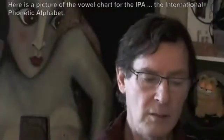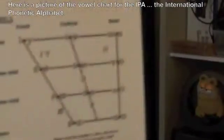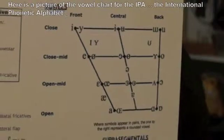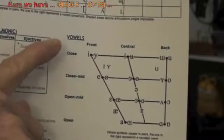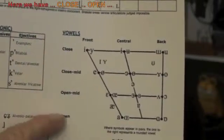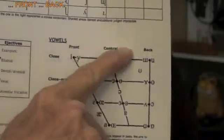So we have close, open, back, front. Here is a picture of the vowel chart for the IPA — the International Phonetic Alphabet. Here we have close, open, front, back.